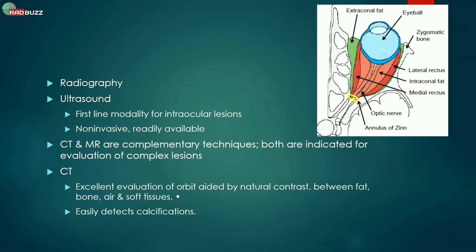Pathology can be purely from the orbit, and then within the orbit it can involve the globe or involve the cone — then intraconal or extraconal. The terminology varies. This is an axial representation of an orbit.